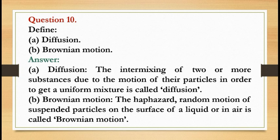Question number 10: Define diffusion. Answer: The intermixing of two or more substances due to the motion of their particles in order to get a uniform mixture is called diffusion. B: Brownian motion — the haphazard random motion of suspended particles on the surface of a liquid or in air is called Brownian motion.